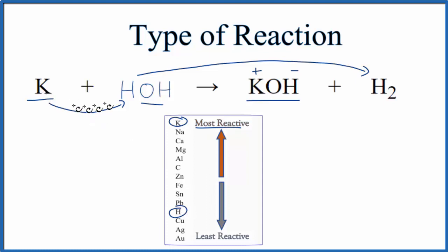So it will be able to push the hydrogen out and then bond with the hydroxide to give you this potassium hydroxide, and then hydrogen H2, it's always a diatomic gas and it's by itself.